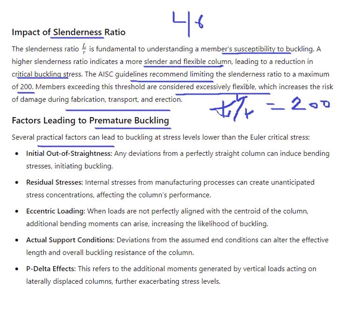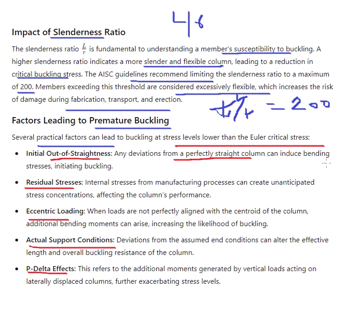Several practical factors can lead to buckling at stress levels lower than the ideal critical stress. Initial out-of-straightness: any deviation from a perfectly straight column can induce bending stresses, initiating buckling. Residual stress from manufacturing processes can create unanticipated stress concentrations affecting column performance.